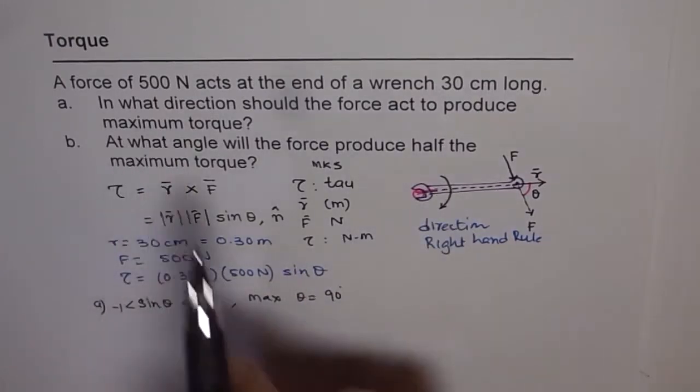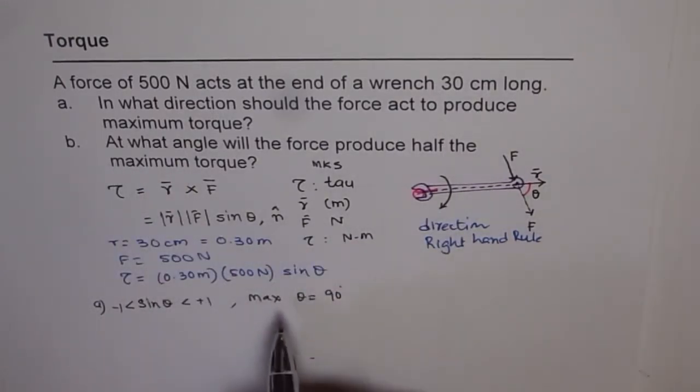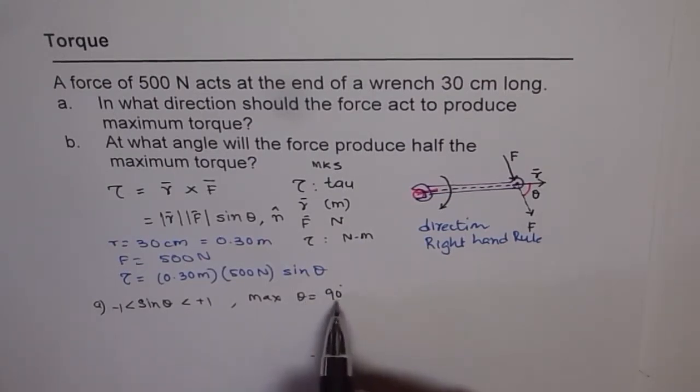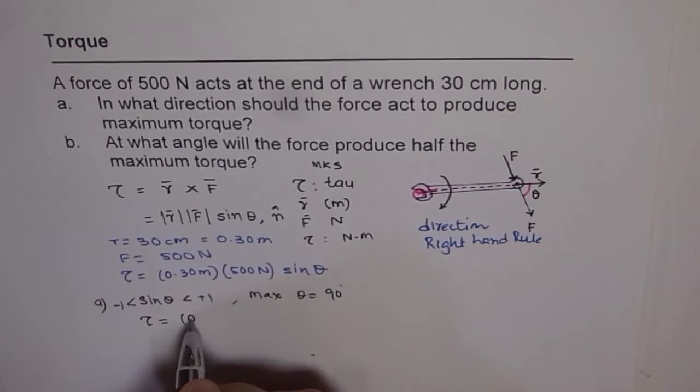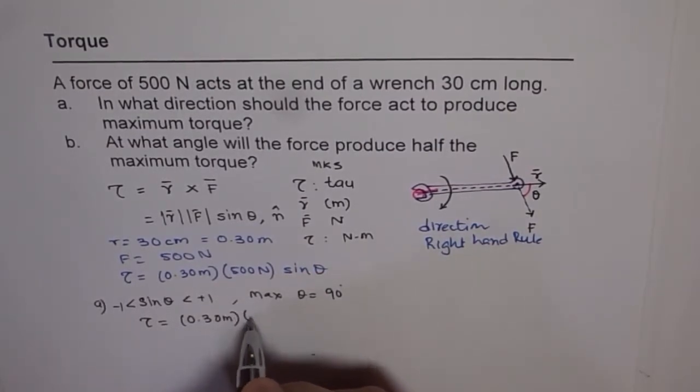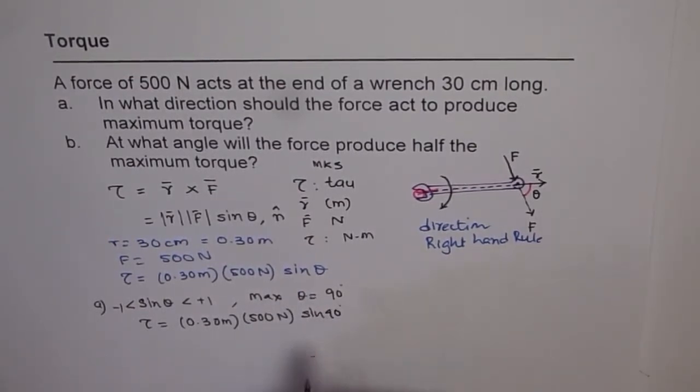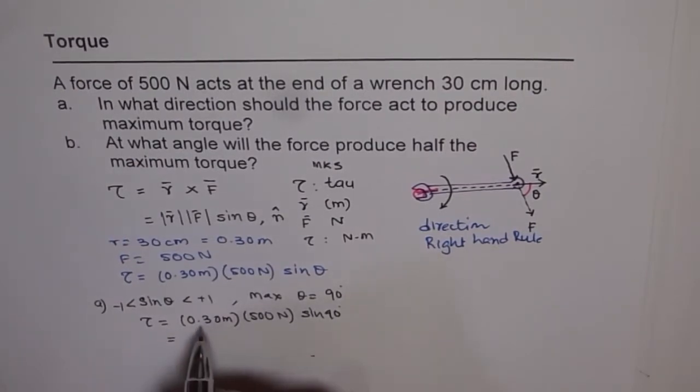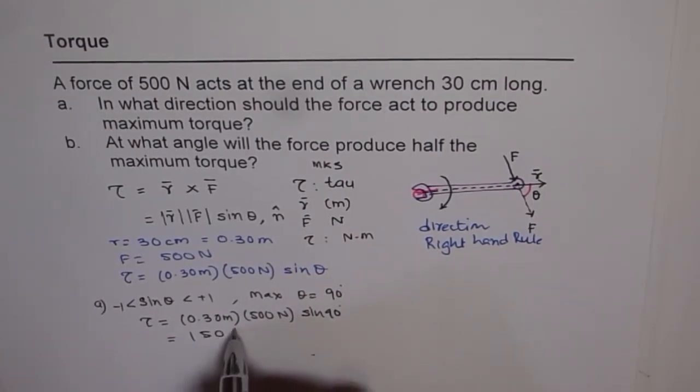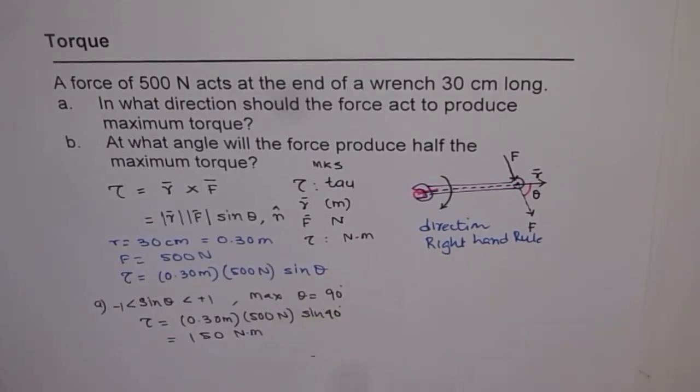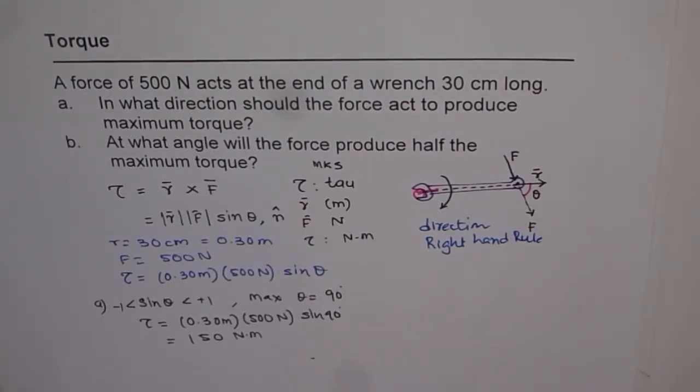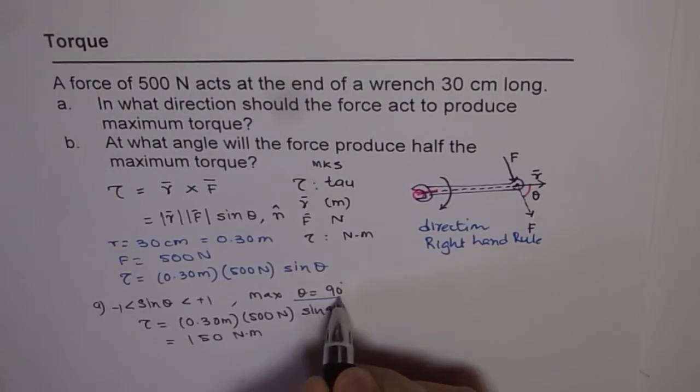Now it says what is the maximum torque. We can find what is the maximum torque for theta equals to 90 degrees. Torque equals 0.30 meters times 500 newtons times sine of 90 degrees. When you multiply this, you get 150 newton meters. This is actually the maximum torque. The question is not really asking for maximum torque, only asking for in what direction. So the answer is theta of 90 degrees.